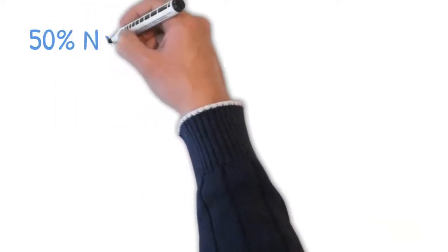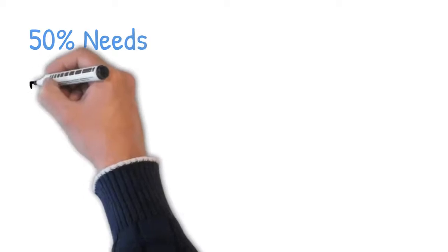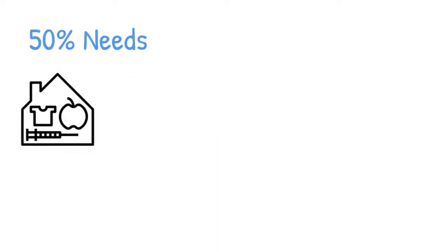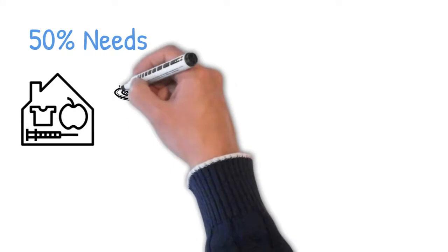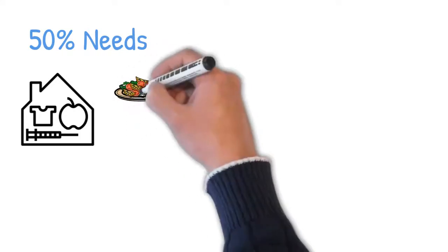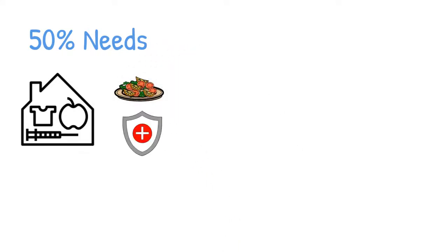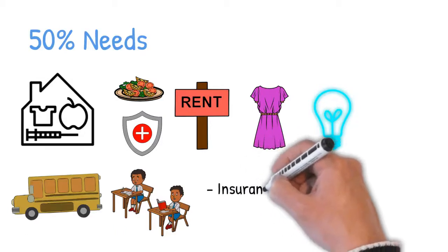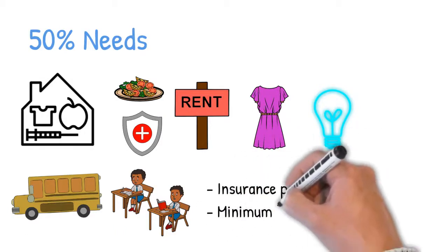Here we go. 50% needs. Needs are essential for survival. They are a must-pick and that's why Senator Warren and her daughter advocate for committing 50% of after-tax income. Examples of needs include food or groceries, health care, rent, clothing, utility, transportation, and child care.